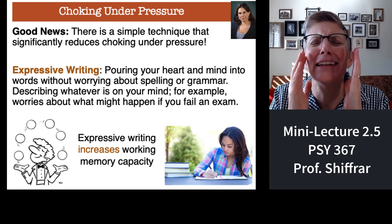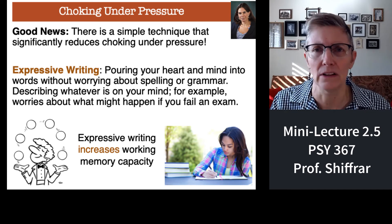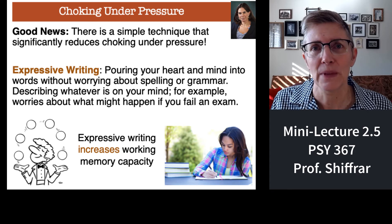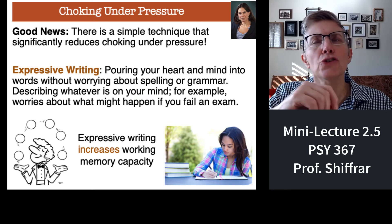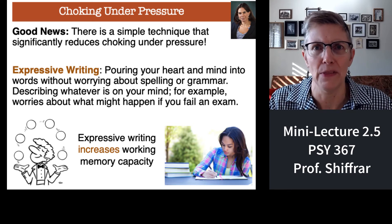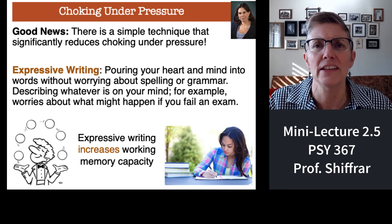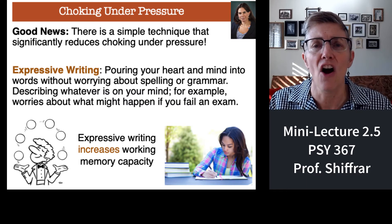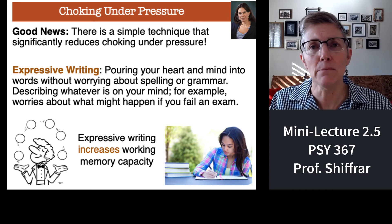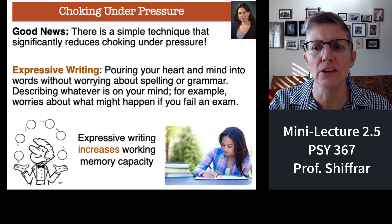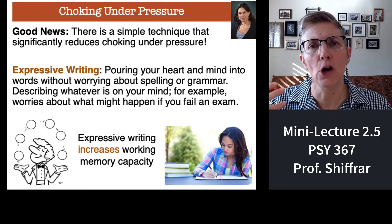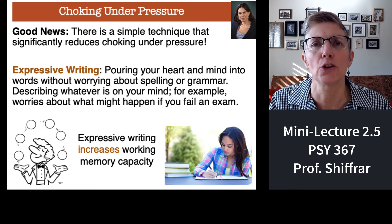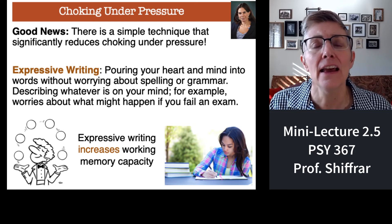Now that you know what causes you to choke, what does cognitive psychology tell us about how to solve the problem? There's an easy solution and it works so well it feels like magic — it's called expressive writing. If you're worried, you take 10 minutes to sit down and write about everything you're feeling, without censoring yourself. You just pour your heart and soul onto the page — everything you're worried about. After 10 minutes you can throw it away or delete the file. That expressive writing makes your worries go away, freeing up your working memory capacity.